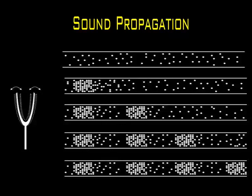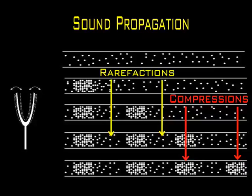The sound wave is transported from one location to another by means of particle-to-particle interaction, with each particle causing a disturbance of its nearest neighbours. Because of the longitudinal motion of the air particles, there are regions where the particles are compressed together and other regions where the air particles are spread apart. These regions are called compressions and rarefactions respectively.